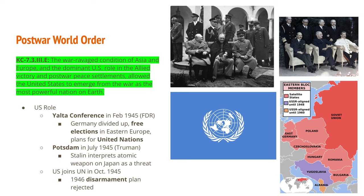In early 1946, just one year into the life of the United Nations, the United States introduced a plan for atomic regulation and disarmament, which was rejected by the Soviet Union. When the United States developed a nuclear weapon and threatened Japan after the Potsdam Conference, Stalin took this as a threat to the Soviet Union. He did not want to be in a position of lacking these weapons and having to comply with U.S. demands under threat of nuclear attack. The Soviet Union eventually developed their own nuclear weapon, and thus began the Cold War.